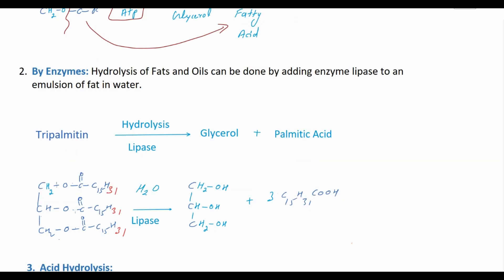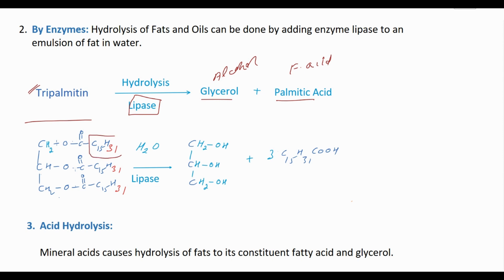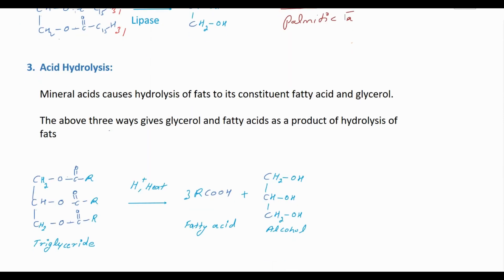Hydrolysis can also occur in the presence of the enzyme lipase. For example, tripalmitin gets converted to palmitic acid and glycerol. Glycerol is the alcohol part and palmitic acid is the fatty acid part. The molecular formula of palmitic acid is C15H31COOH. Tripalmitin undergoes hydrolysis in the presence of lipase enzyme to give palmitic acid.